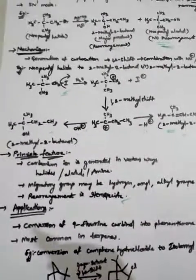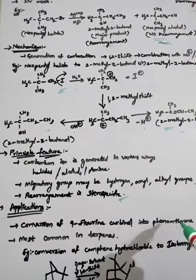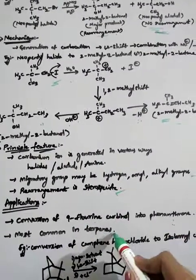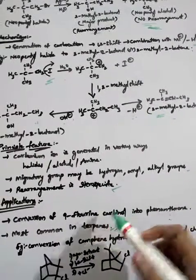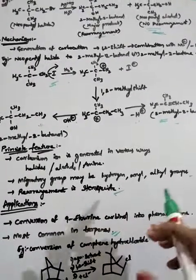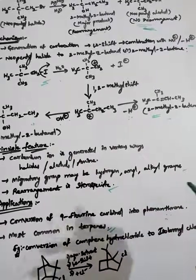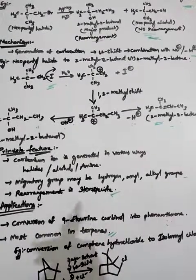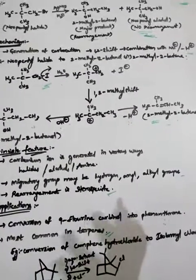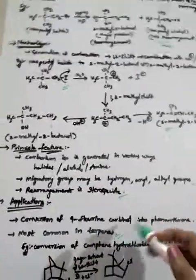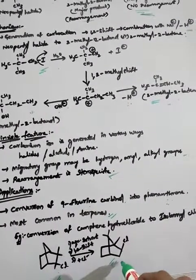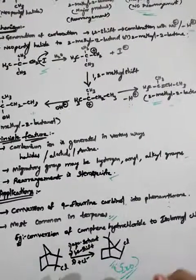There are two main applications of Wagner-Meerwein rearrangement: the conversion of 9-fluorenyl carbonyl into phenanthrene, and it is most commonly seen in terpenes. Terpenes are volatile essential oils released by some plants and a few animals, helping plants protect themselves from herbivorous animals. As an example, camphene hydrochloride converts to isobornyl chloride via this rearrangement.